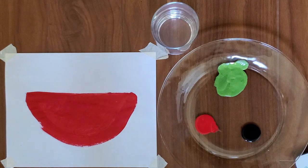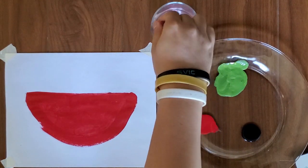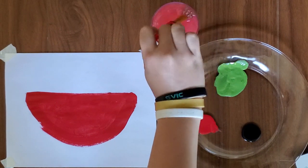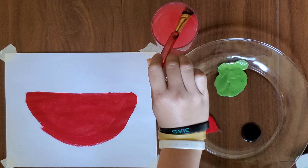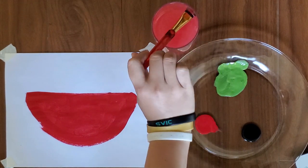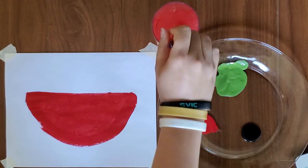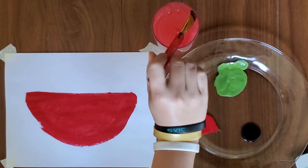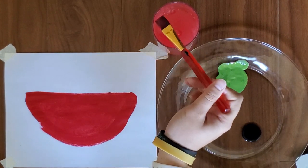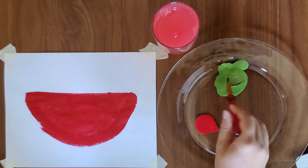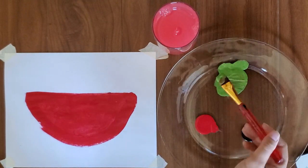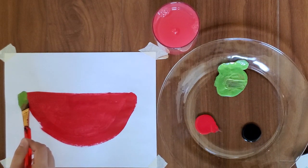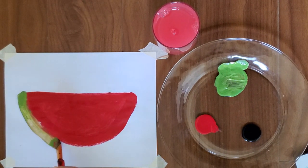Then we are going to put the paintbrush in the water to wash away our red. Next we're going to use our green. And with the green we're going to make another U right outside the red.